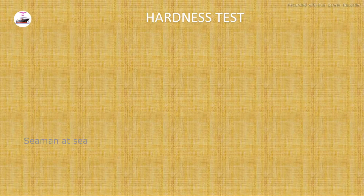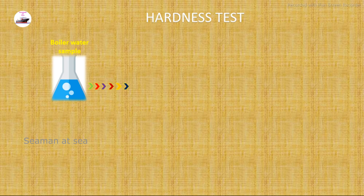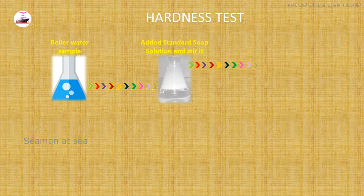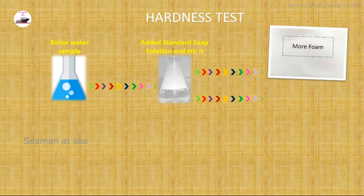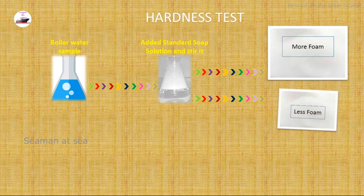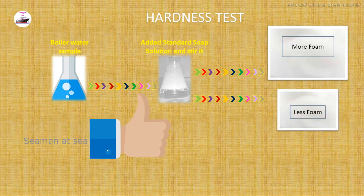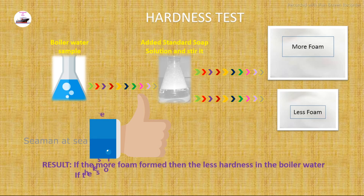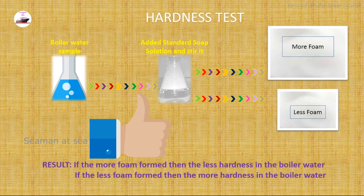For the hardness test, we take a boiler water sample in a beaker and add standard soap solution, then stir it properly. Foam will form — if more foam is formed, there is less hardness in the boiler water; if less foam is formed, there is more hardness present. This is how we find the hardness onboard ship. We have now seen all six testing procedures.